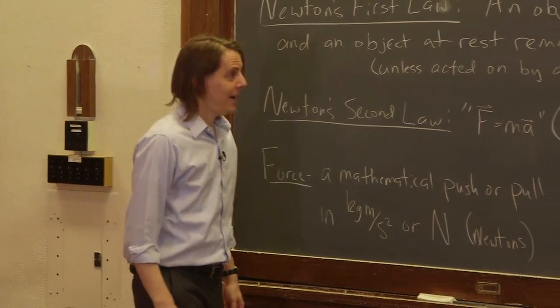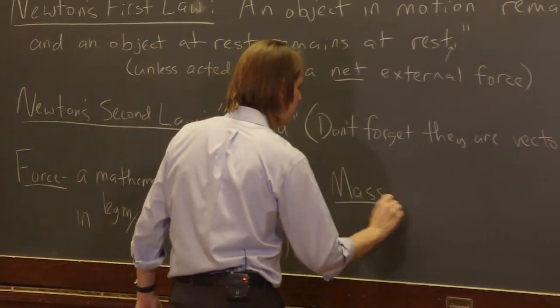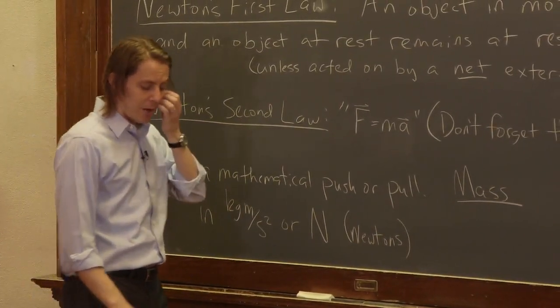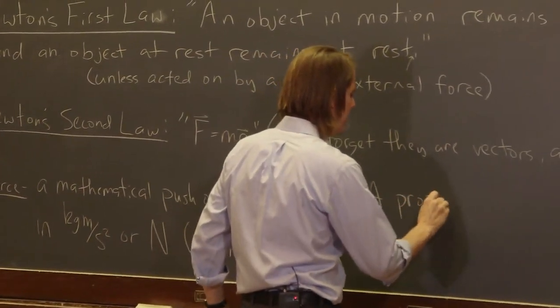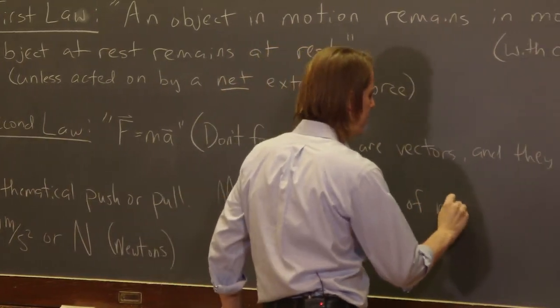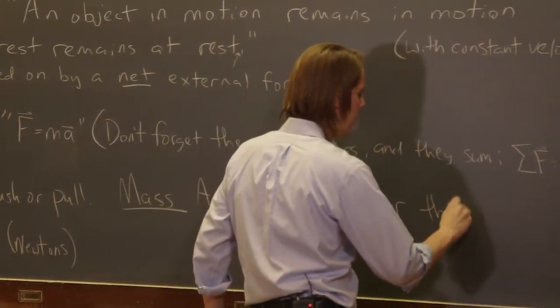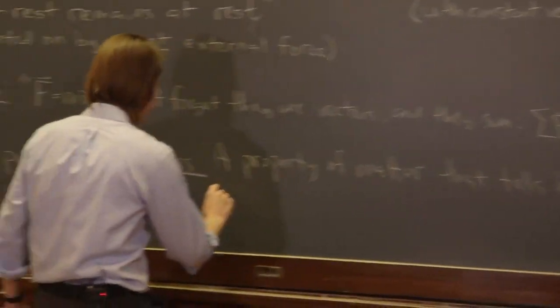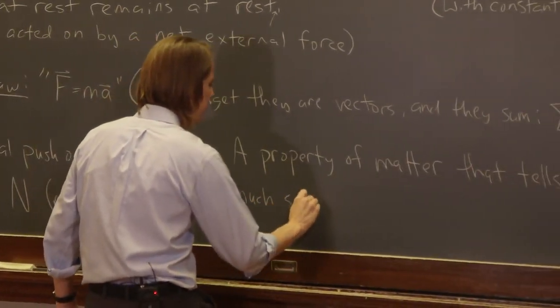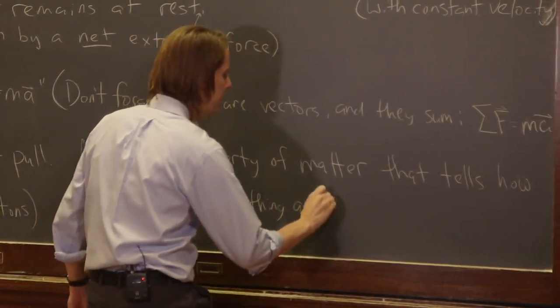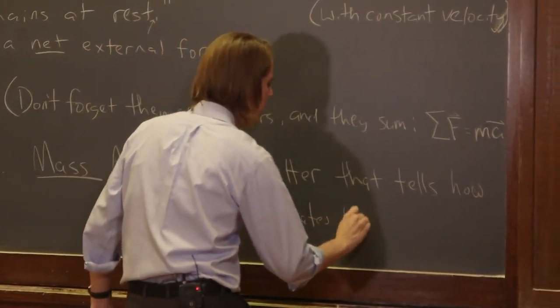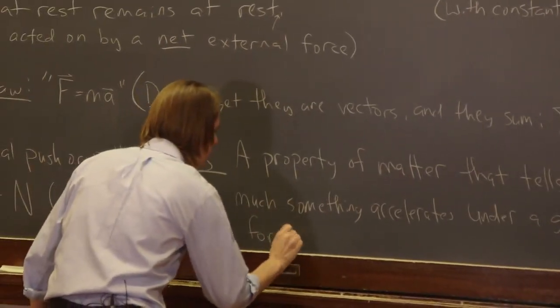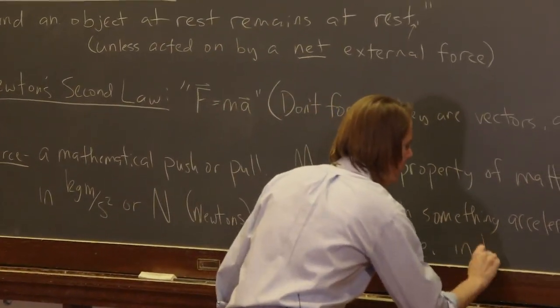Let's define mass. This is a little risky. Mass. So mass, at this point, this is our simple definition, is a property of matter that tells how much something accelerates under a given force. That's it. And it's in kilograms.